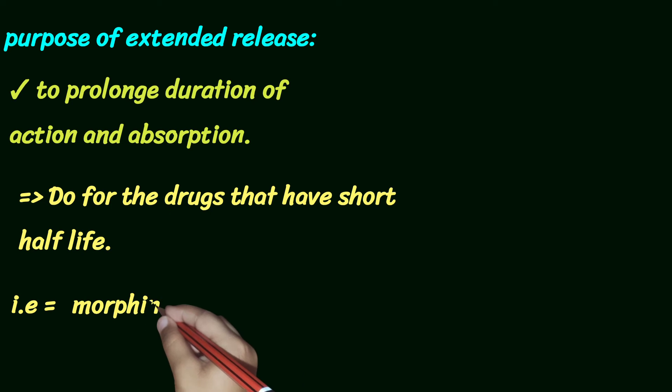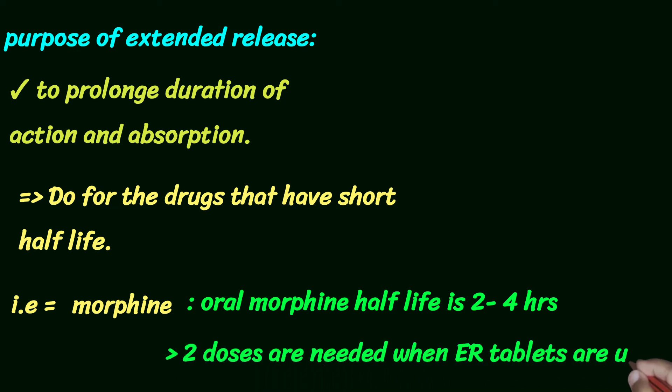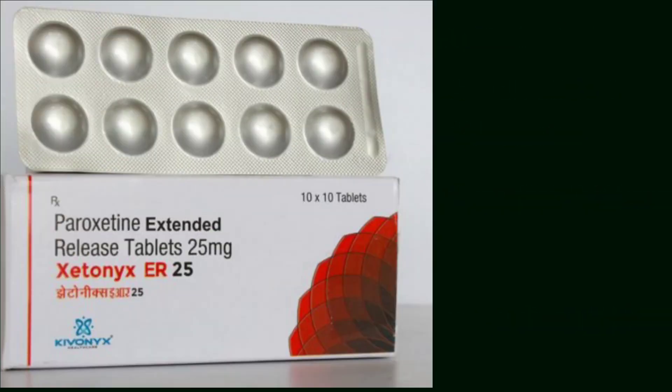For example, oral morphine has a half-life of 2 to 4 hours, so it would require 6 times administration daily. When it is coated or mixed with a special thing that controls its release, it then only requires 2 times administration daily. Here you can also see ibuprofen extended release as another example.